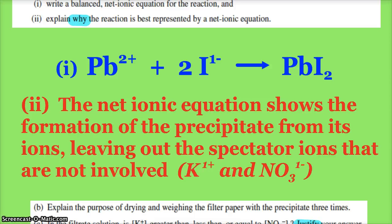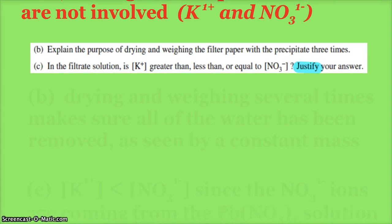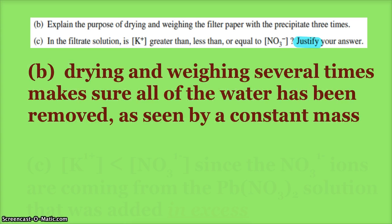Part B says: explain the purpose of drying and weighing the filter paper with the precipitate three times. I mentioned that earlier. We really want to make sure all of the water has been removed, and we know that is happening once we see consecutive constant mass measurements.